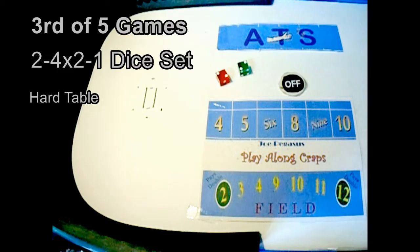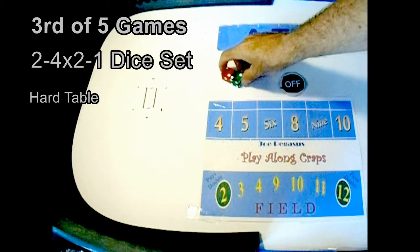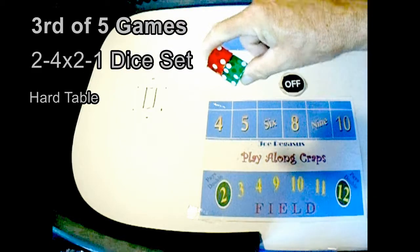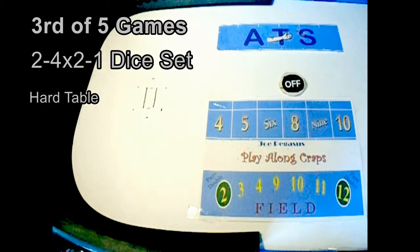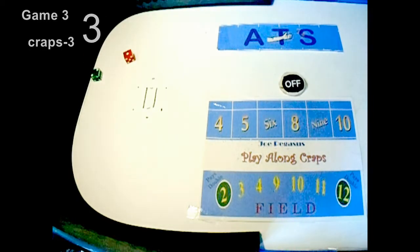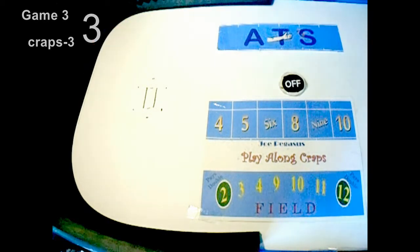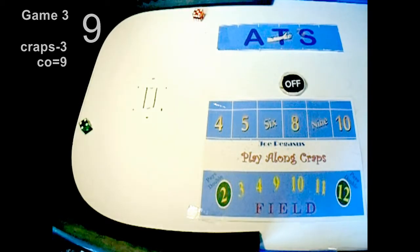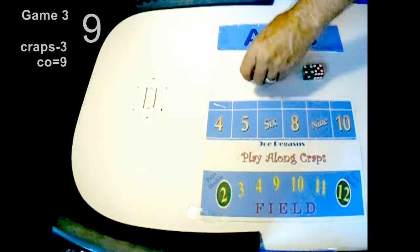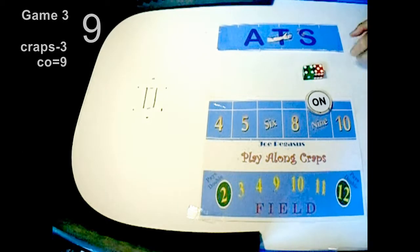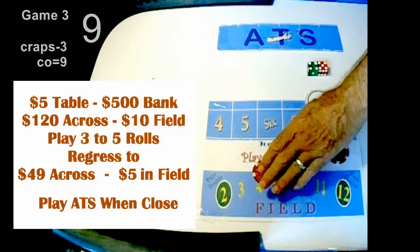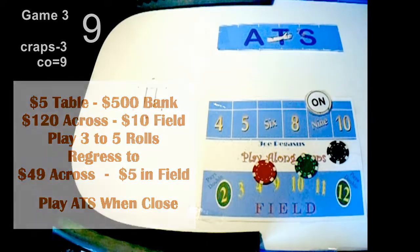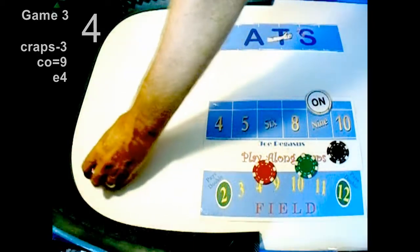Game three of the two four two one dice set on a hard table. An okay set. You can even take it to a casino as long as it keeps going the way it's going. You don't need to make a lot of money, you just need not to lose money. Oh craps three, yeah who needs that. Good come out, I'd rather a ten but can't have a ten, nine's good. Four five nine. 120 across, 10 in the field. Come out is nine.